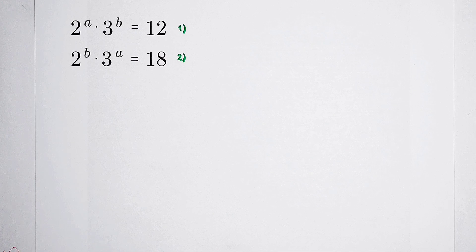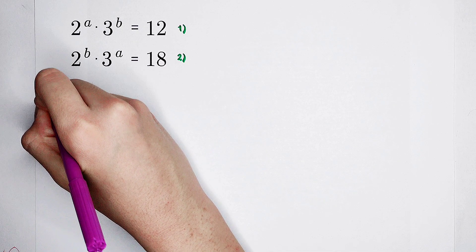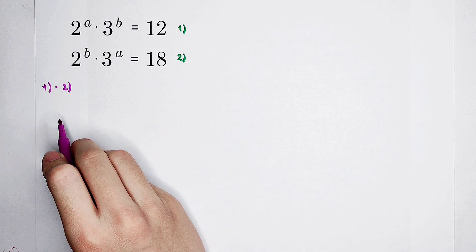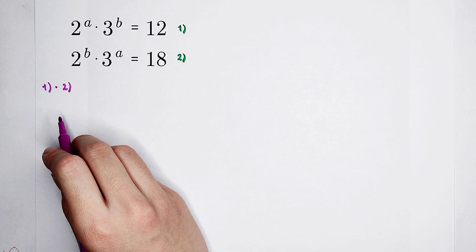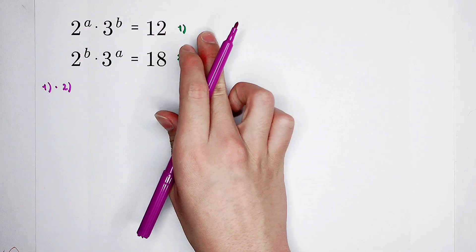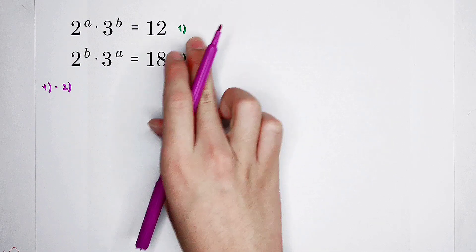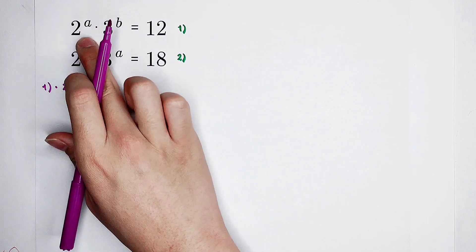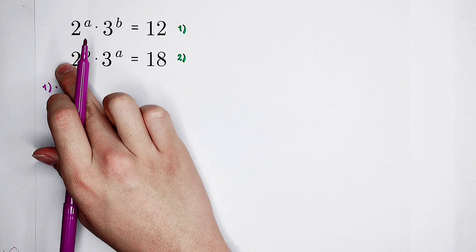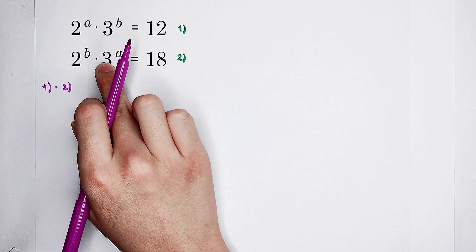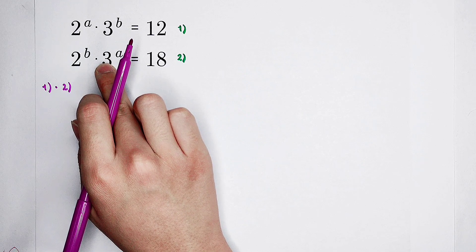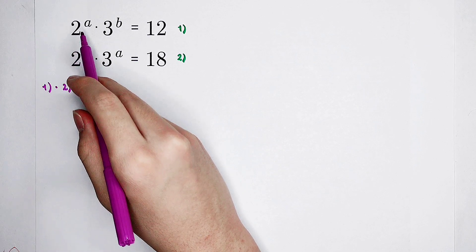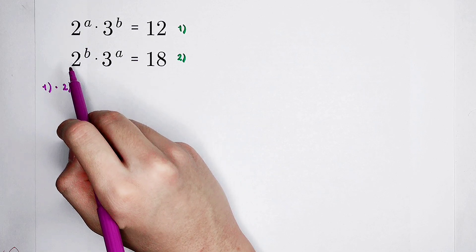Let's take the first equation and the second equation. Firstly, find the multiplication of them. The product of the first equation and the second equation is: 2 to the power of a times 3 to the power of b, then times 2 to the power of b, then times 3 to the power of a. I can switch the orders, so I'm going to let 2 to the power of a multiply by 2 to the power of b first.